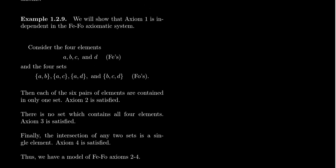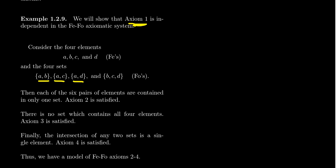I want to show here that axiom one of the FIFO theory is independent. Axiom one says there are exactly three fees in the system. So I need a model of axioms two, three, and four that does not have three fees. I'm going to construct a model with four fees: A, B, C, and D, and define the foes to be sets of fees. There will be four foes: AB, AC, AD, and BCD.